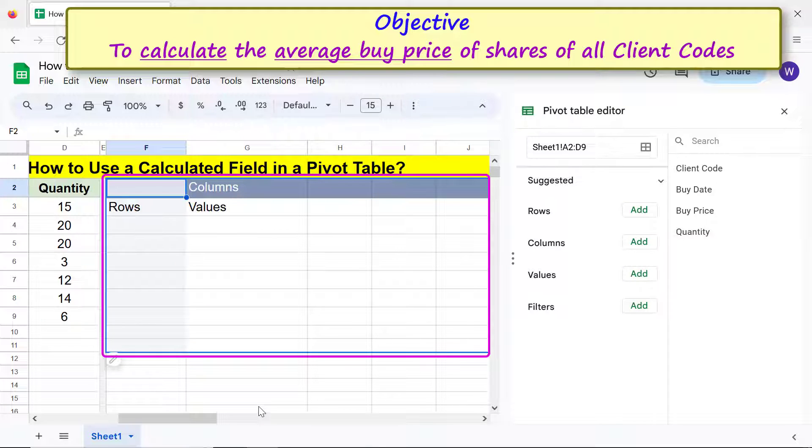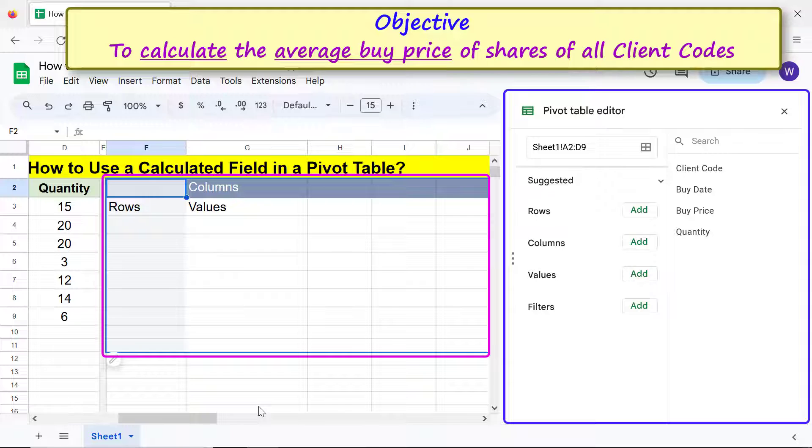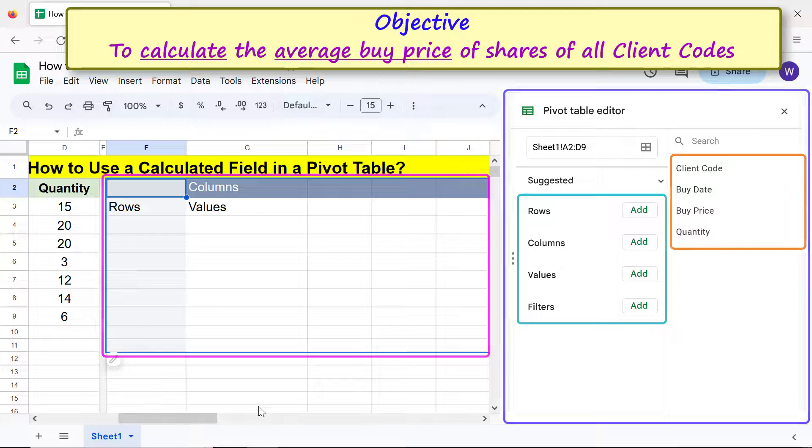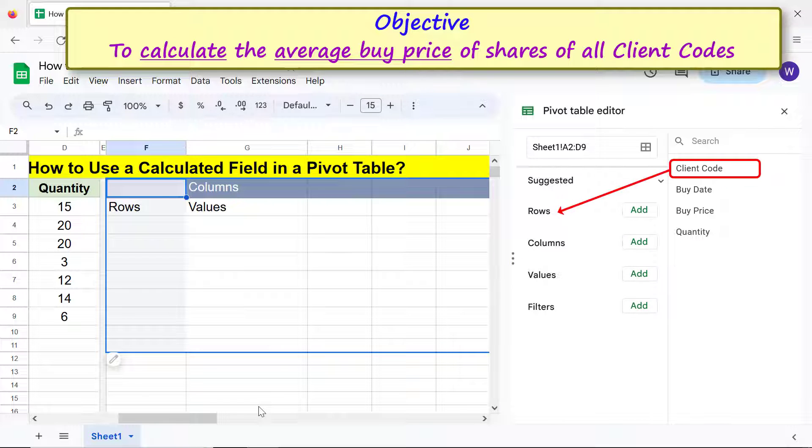This is the blank pivot table. This is the pivot table editor with the pivot table elements and source table headers. Drag and drop the header you wish to display in Rows below Rows.